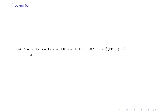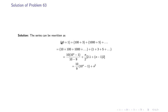Problem 63: Prove that the sum of n terms of the series 11 + 103 + 1005 + ... is (10/9)(10ⁿ − 1) + n². We rewrite each term as (10 + 1), (100 + 3), (1000 + 5), and so on. The first series is a GP: 10 + 100 + 1000 + ..., and the second series is an AP with first term 1 and common difference 2. Applying both formulas gives the desired result.